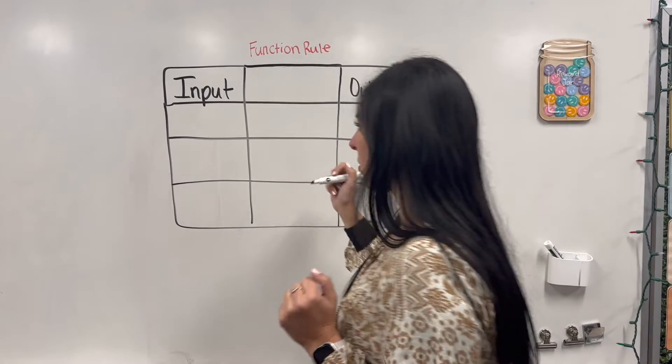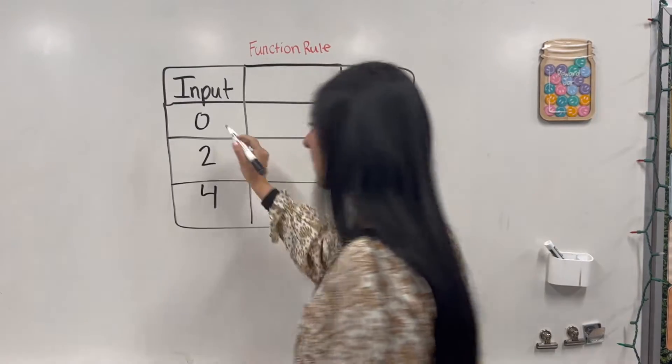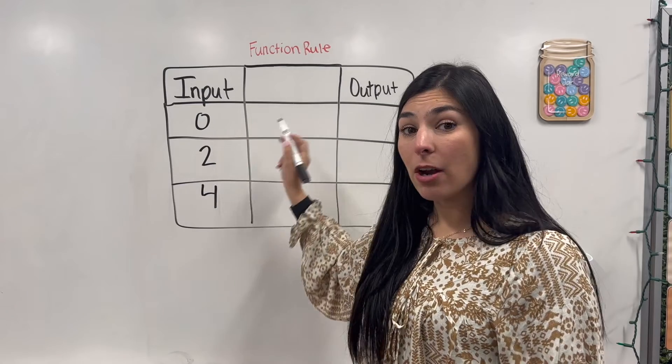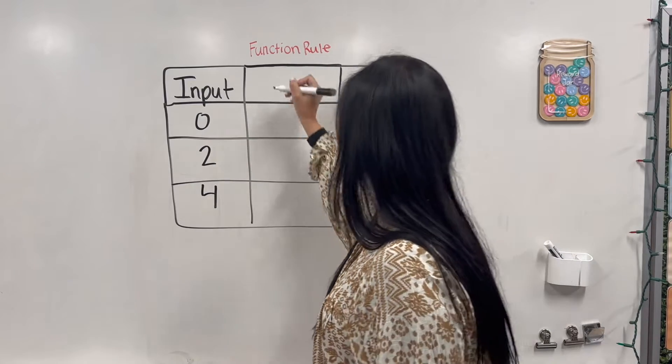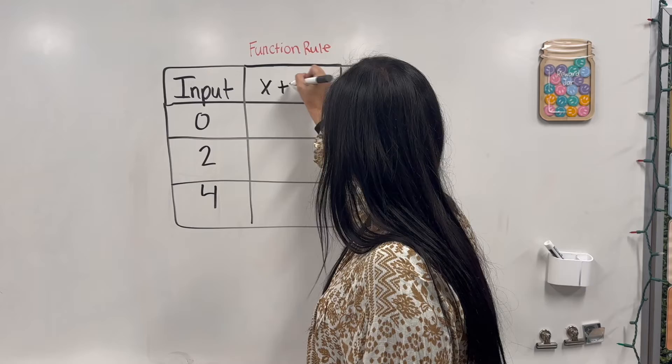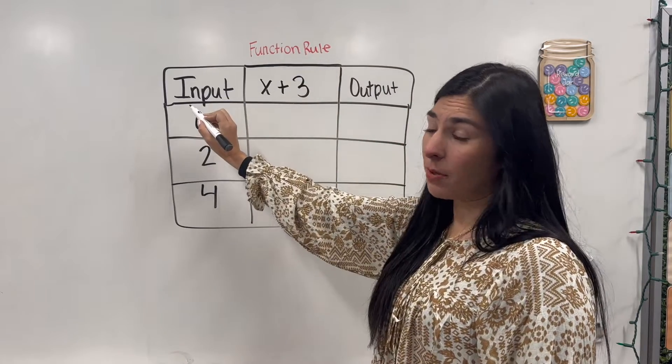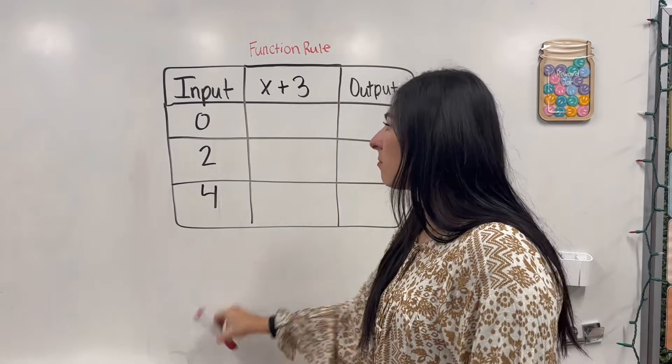So for my input, let's go ahead and start with I have 0, 2, and 4. And our function rule is going to be x plus 3. x is going to be our input. So let's go ahead, plug these in, and solve.